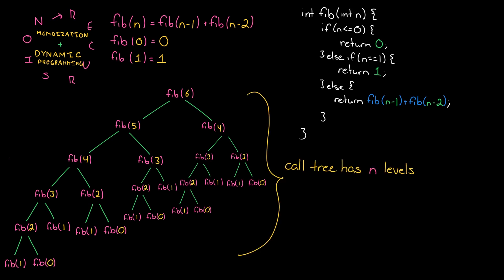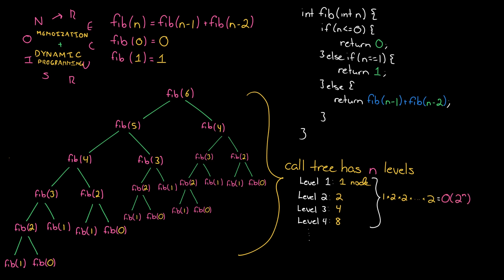The first level will have one node, the second level will have two nodes. Each node has two children, so we'll have four nodes on the next level, then eight and so on. If you take one and double it n times, we're going to wind up with roughly two to the n nodes in the tree. So this gives us a runtime of O(2^n), and I was able to compute this by hand fairly quickly, so there's a bit of a mismatch here.